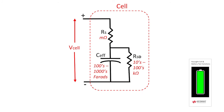Using a simple electrical model of a cell, we also showed how the self-discharge phenomenon can be modeled as a resistance, R-sub-SD, in parallel with the effective capacitance of the cell. In this model, this self-discharge resistance is typically in the range of tens or hundreds of kilo-ohms.